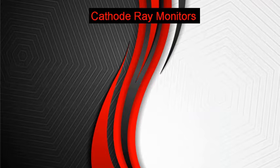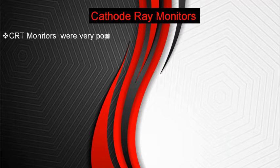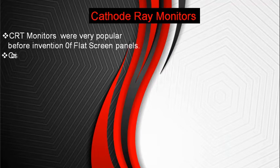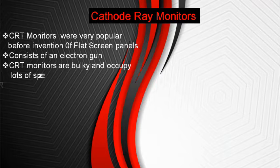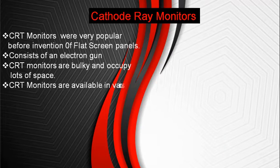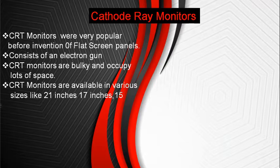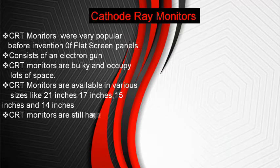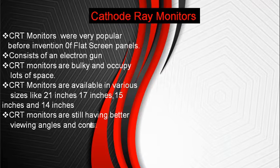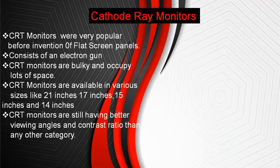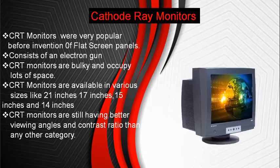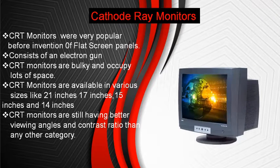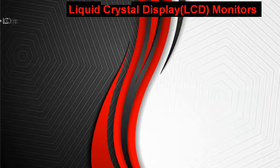We will discuss first the CRT monitor. CRT monitors were very popular before the invention of flat panels. These monitors consist of an electron gun. The main problem of these monitors was that they were very bulky and occupy lots of space. We can have CRT monitors in various sizes. CRT monitors still have better viewing angles and contrast ratio than any other category.